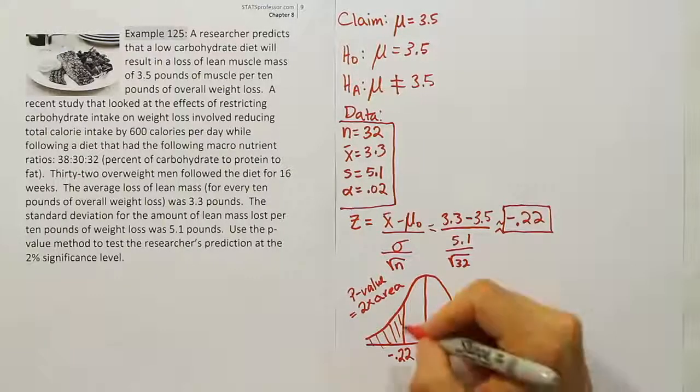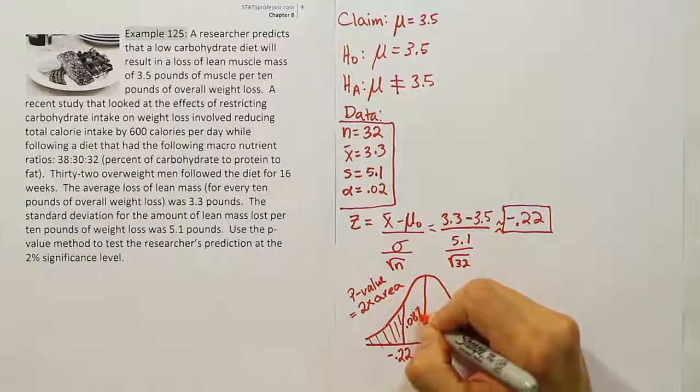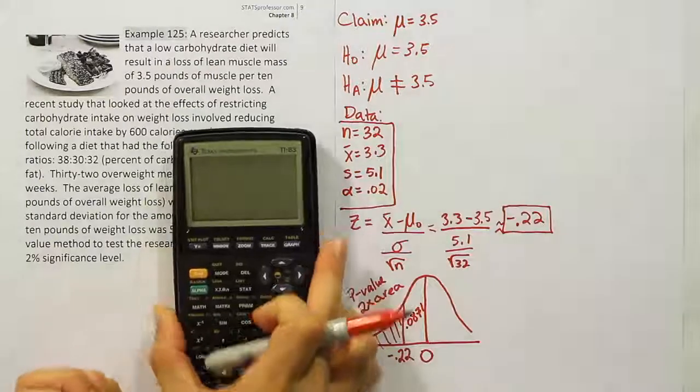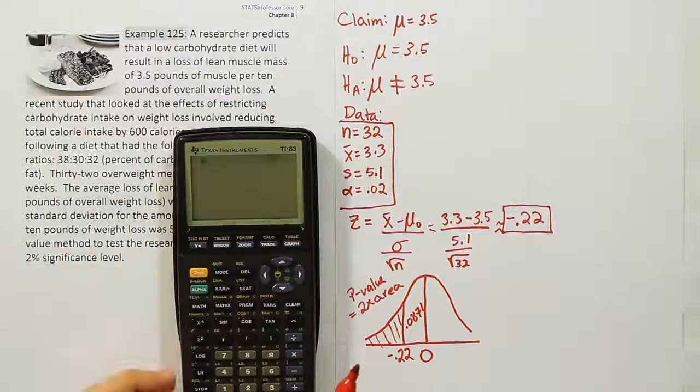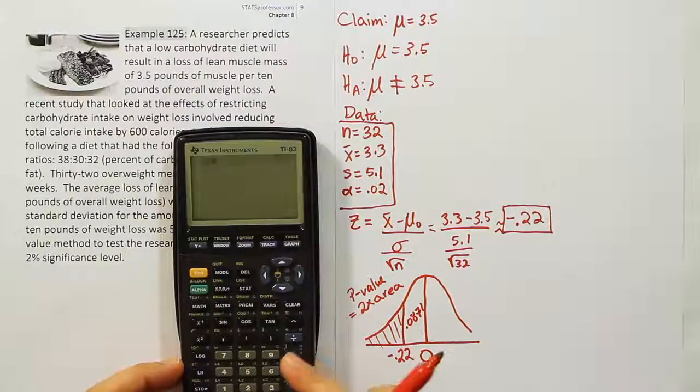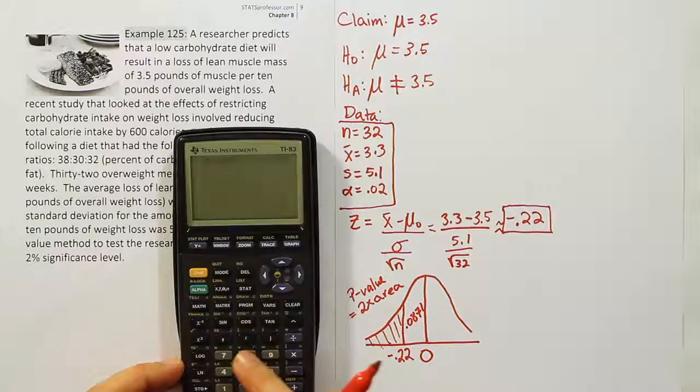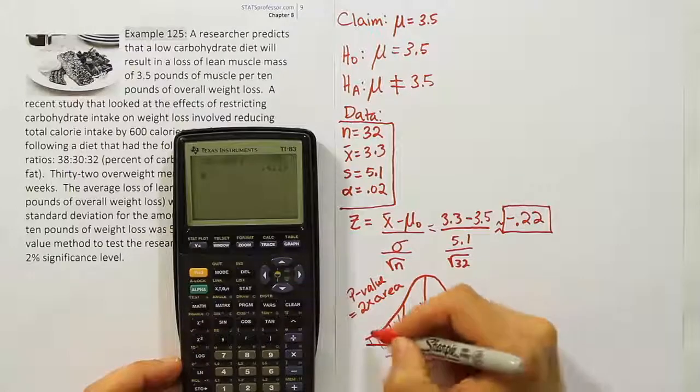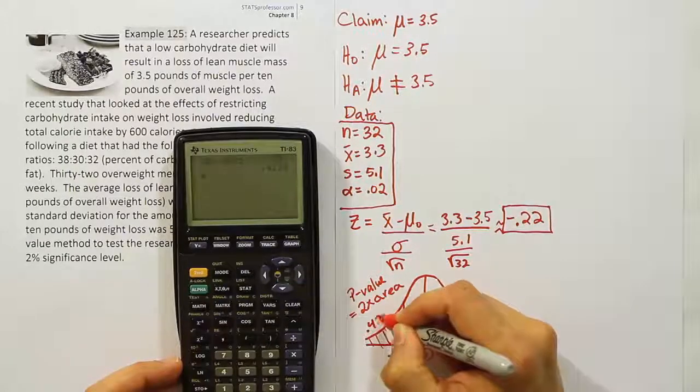We found 0.0871. Remember, that's from here to here, not the area we wanted. So we take that area and subtract it from 0.5. So 0.5 - 0.0871. Once we do that, we have the result for this tail: 0.4129.